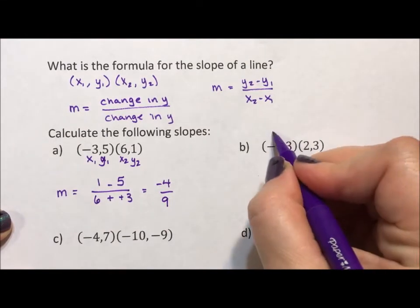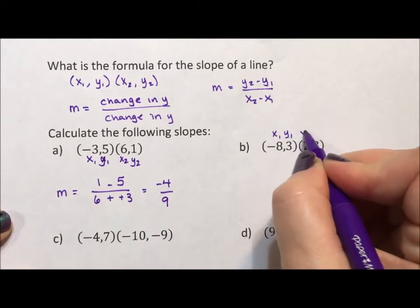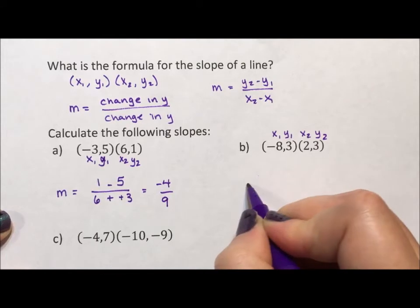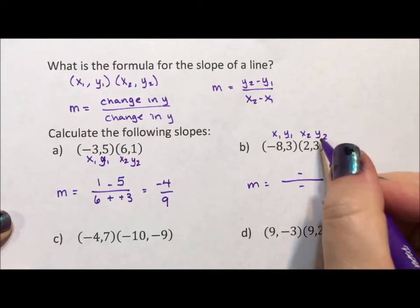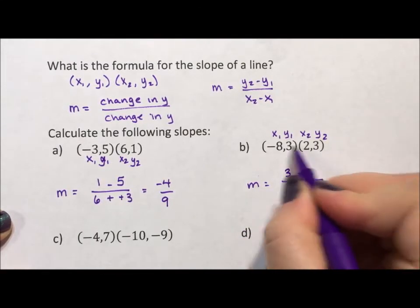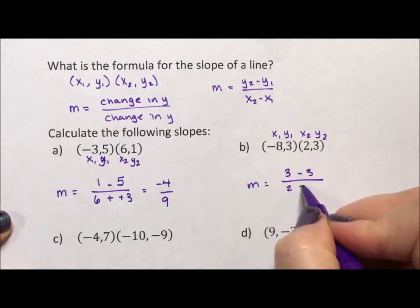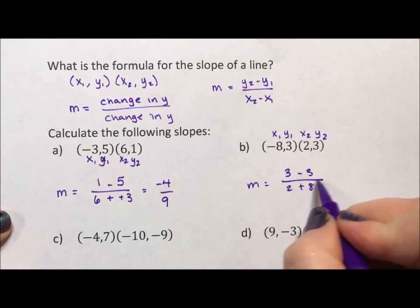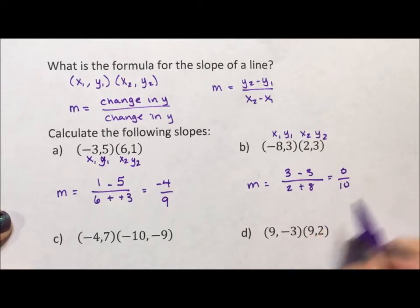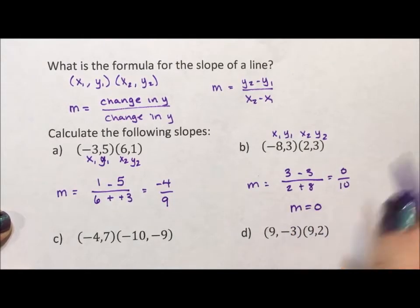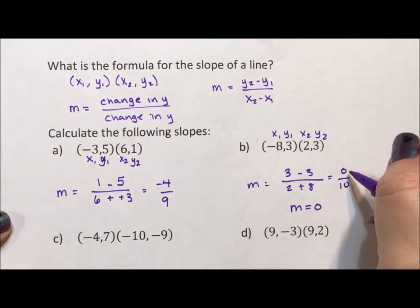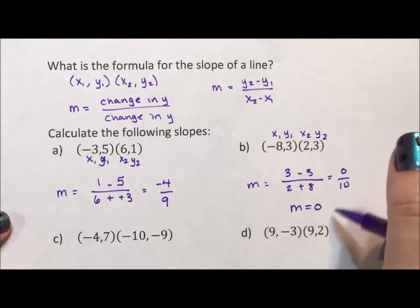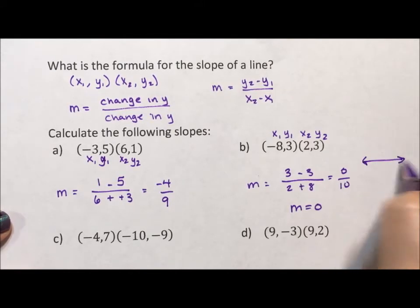Alright, x sub 1, y sub 1, x sub 2, y sub 2, m equals division, subtraction. Okay, y sub 2 minus y sub 1, x sub 2 minus x sub 1, minus a negative, 0 over 10. This is m equals 0. Be wary of the zeros. 0 in the numerator is fine. That's just your horizontal line with a slope of 0.